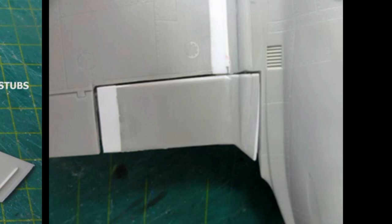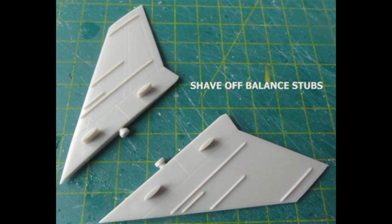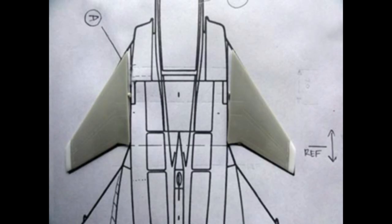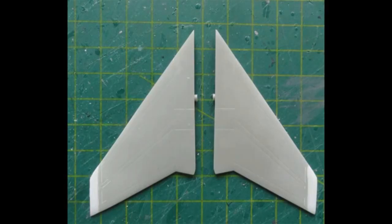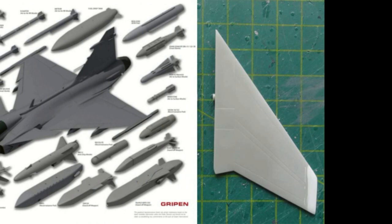The shape of the canards is a good basis but first remove the raised stubs and raised details. Next, add a small tip extension of 3 millimeters with card. The canards were not yet installed at this stage as they are very vulnerable.